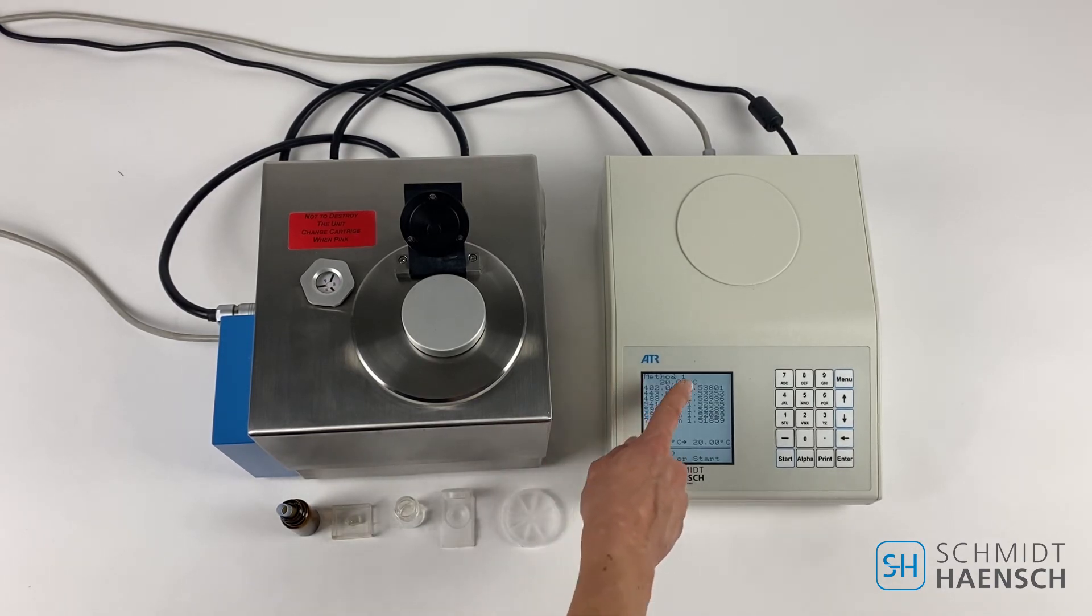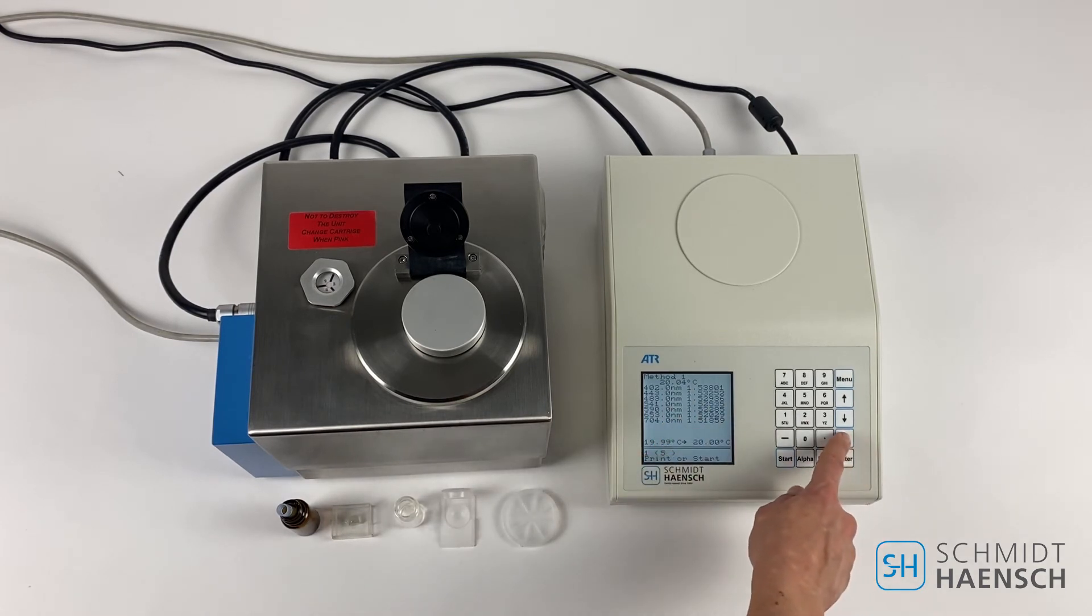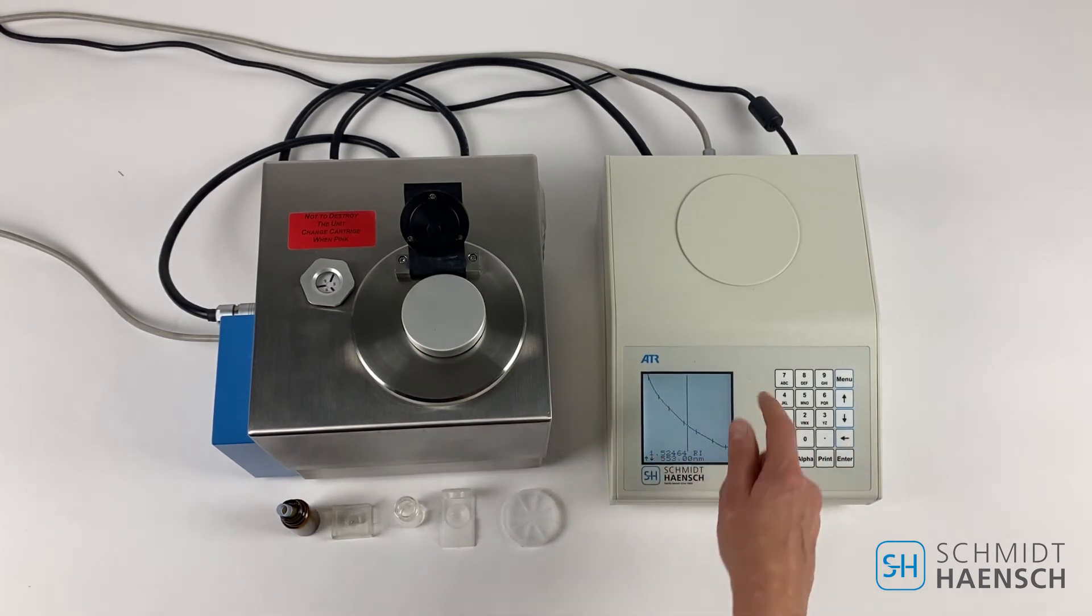The wavelengths are on the left side, the corresponding refractive indexes on the right. To visualize, see the dispersion curve.